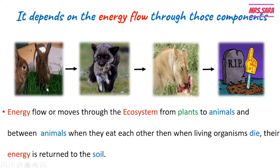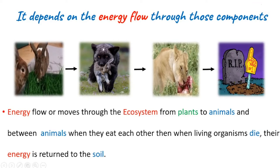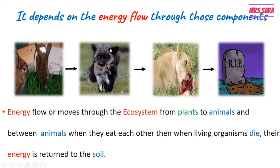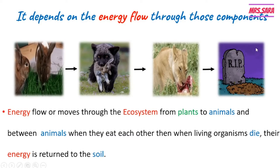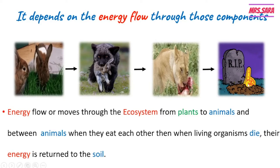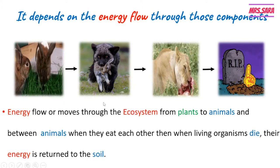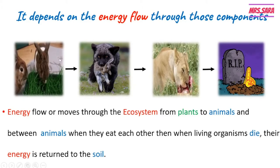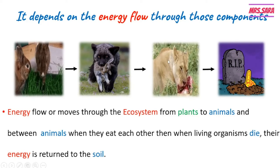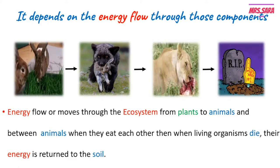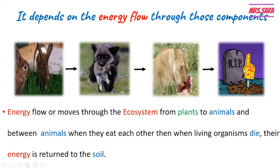Energy flows through the ecosystem from plants to animals. The rabbit eats grass, so energy flows from the grass to the rabbit. Then the fox eats the rabbit, so energy moves from the rabbit to the fox, then to another animal. When the animal dies in the soil, the energy flows to the soil. When living organisms die, their energy is returned to the soil.